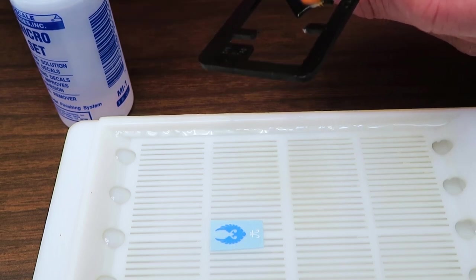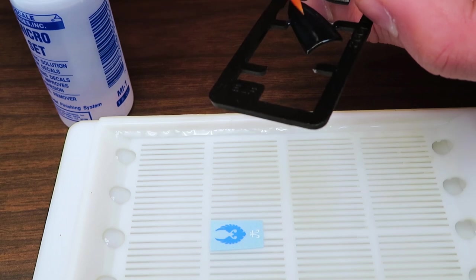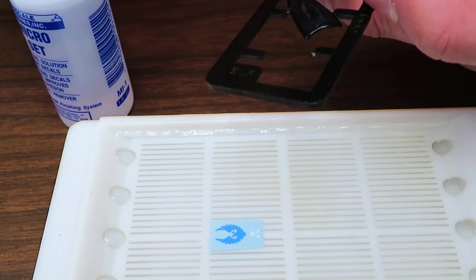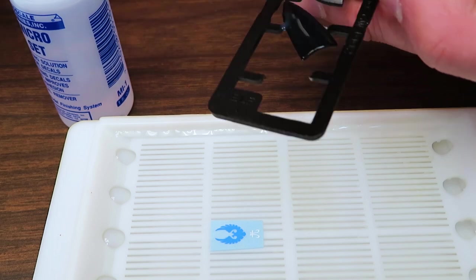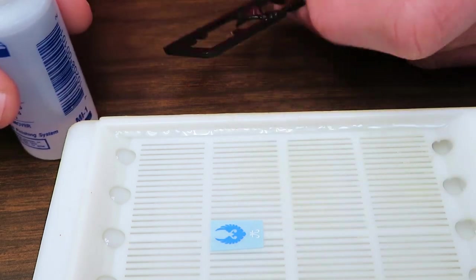Now if you've got a good gloss coat on there, this stuff will kind of try to bead a little bit like a wax coat on a car. You just kind of got to work it in and work it over the whole thing. All right, we're just going to let that sit.